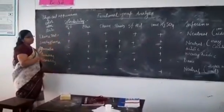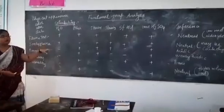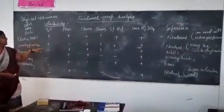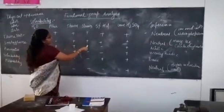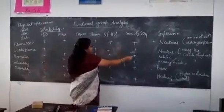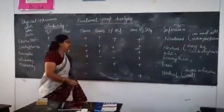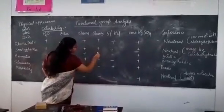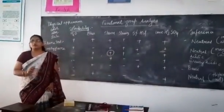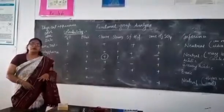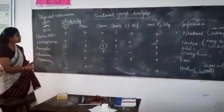Suppose the results show that the compound is insoluble in water, soluble in ether, soluble in sodium hydroxide, sodium bicarbonate, HCl, and concentrated sulfuric acid — then it is acidic. Why is it acidic? Because it is soluble in base. Acidic substances always dissolve in basic substances. Acidic compounds can be carboxylic acids.